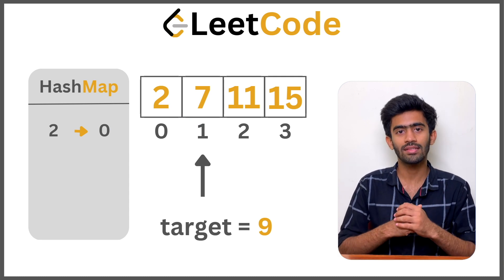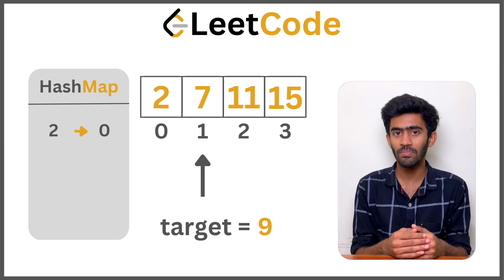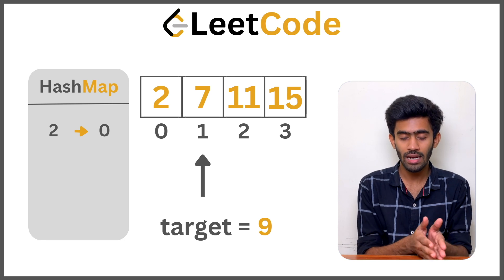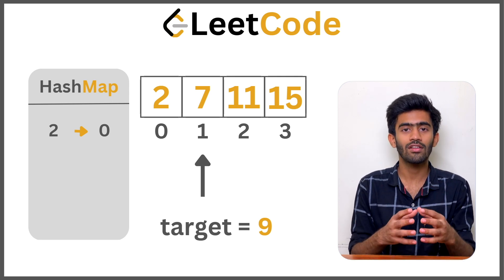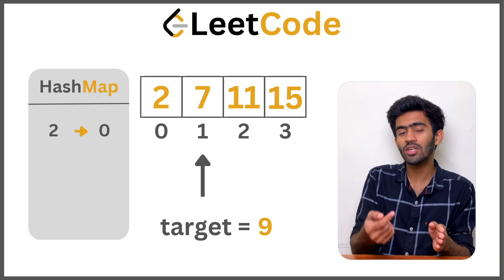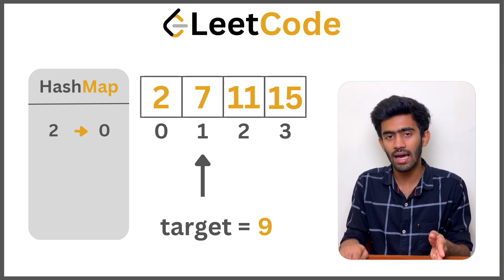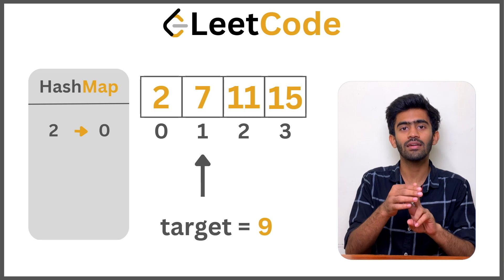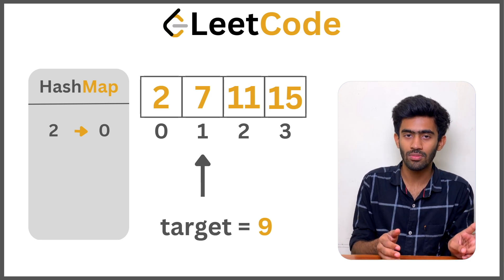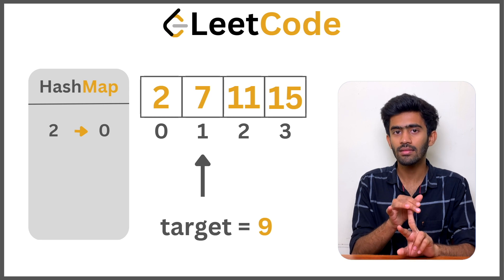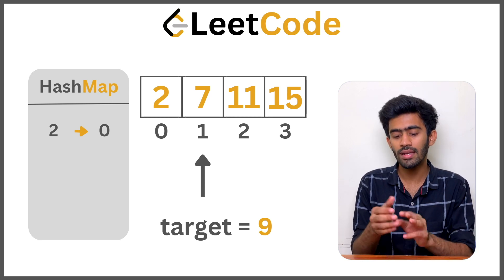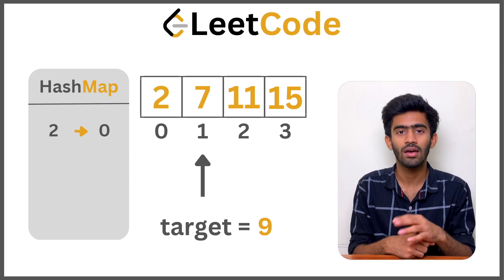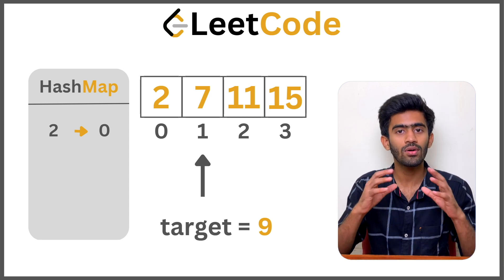The gist of the algorithm is: declare a hash map that stores each value and its respective index. Traverse the given array. For each number, first find the complement — the number that must be added to it to get the target. Then check whether the complement is already present in the hash map. If it is present, we have the answer — return it. If it is not present, add the current element into the hash map and repeat the loop. Now let's go to LeetCode and code this algorithm.